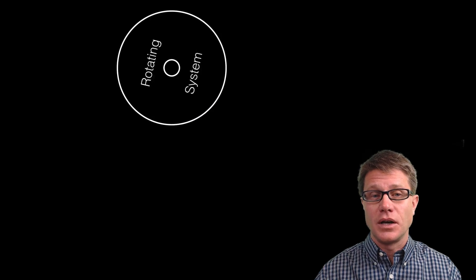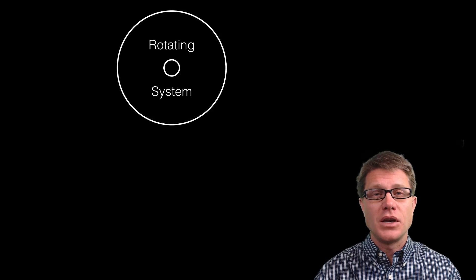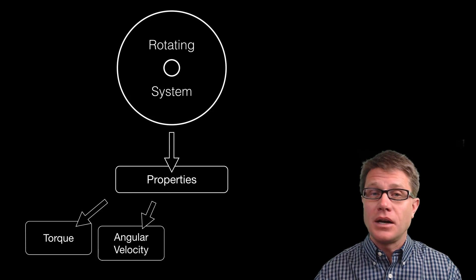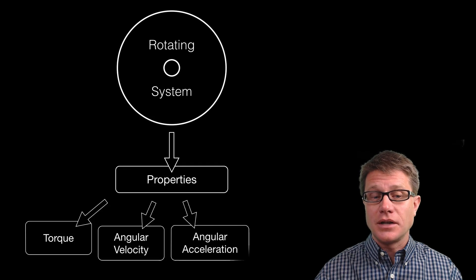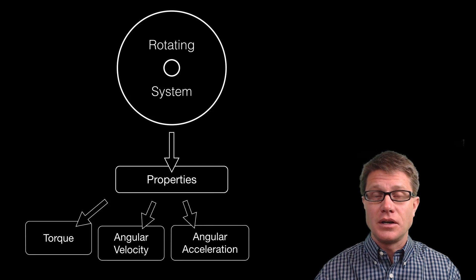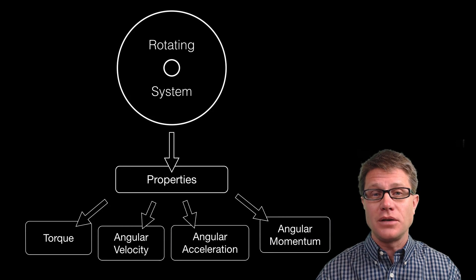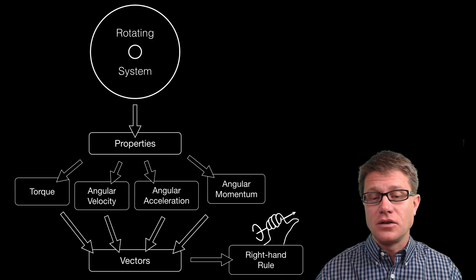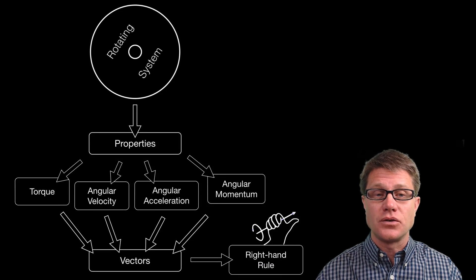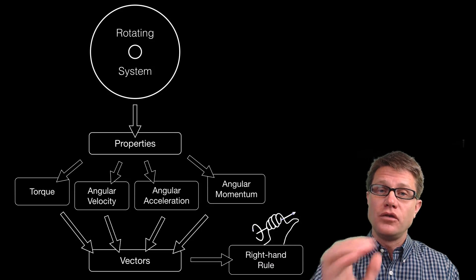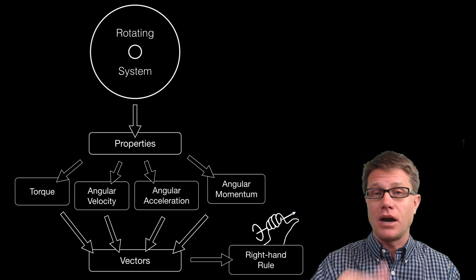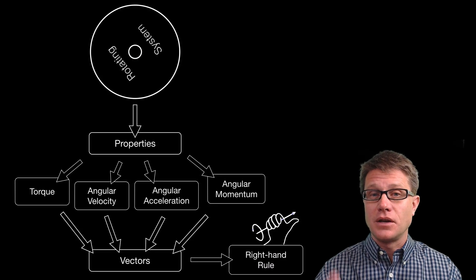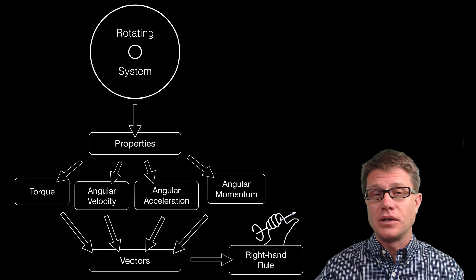If you have a rotating system — this one is rotating counterclockwise — there are going to be a number of different properties. There could be a torque or force applied, maybe increasing angular velocity, giving angular acceleration. Since the object is moving and has rotational inertia, it also has angular momentum. All four of these are vectors, and it's very simple to figure out which direction they point using the right-hand rule. If a system rotates counterclockwise, you use your right hand, curl your fingers in the direction of rotation, and your thumb points right out at you. If it rotates the other direction, flip your hand and your thumb points away from you.